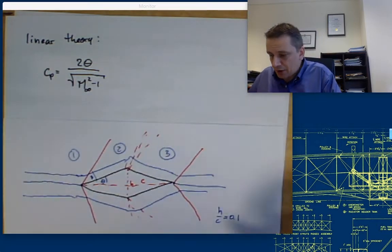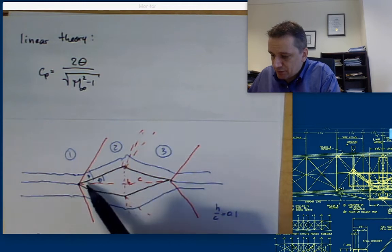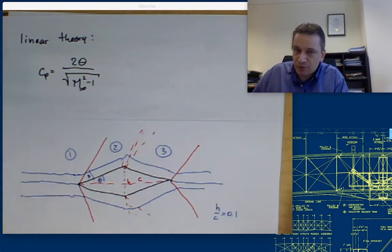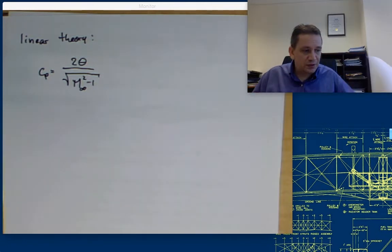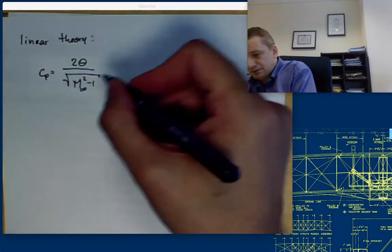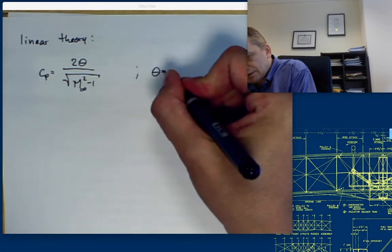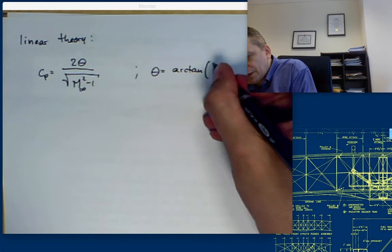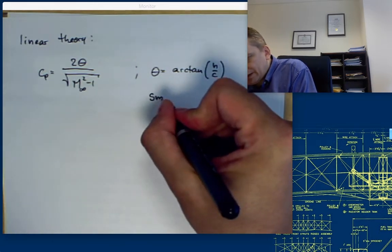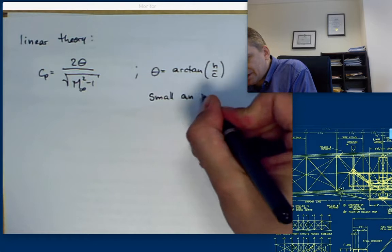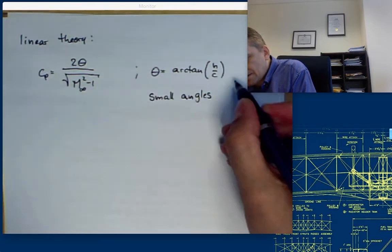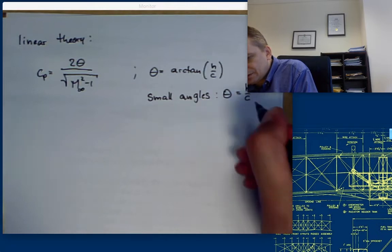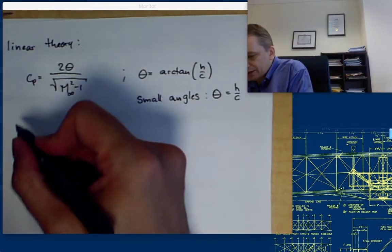So we have here our flow fields. We have a theta over here and a theta over here. The theta is going to be the arctangent of H over C. But for small angles, you can also say theta is equal to H over C. That makes it a bit easier for us to calculate.